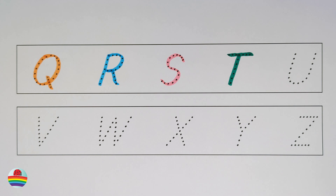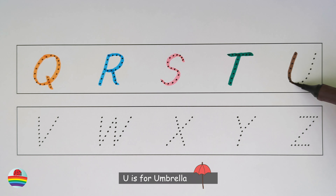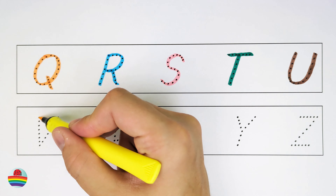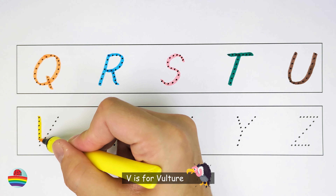D. D is for daisy. E. E is for eraser. F. F is for flower.